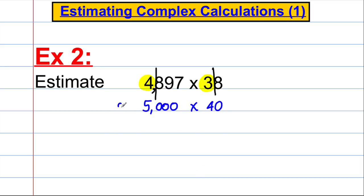10 even, to 38 is 40. So we're trying to work out where it's approximately equal to 5,000 multiplied by 40. This is equal to 200,000. OK?